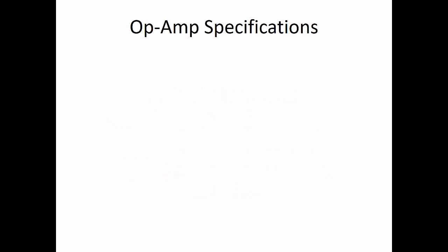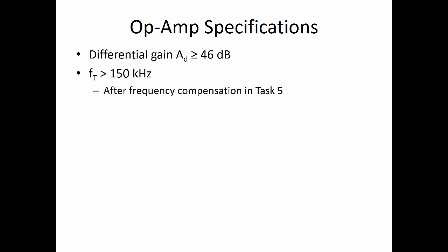Let's review what the op-amp specifications are. The differential gain is supposed to be larger than or at least equal to 46 decibels, so 200 volts per volt. The unit gain frequency should be larger than 150 kilohertz.